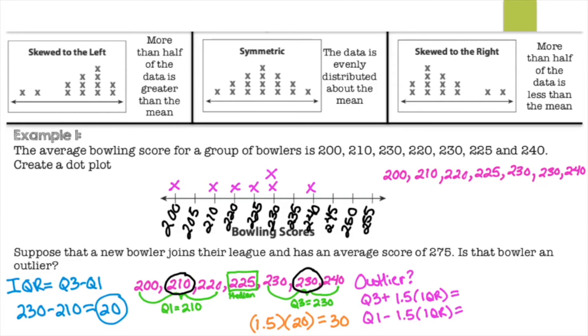Well, quartile 3 was 230 right here. 230 plus 30 is 260. Quartile 1 was 210. And it says 210 minus 30 would be 180.